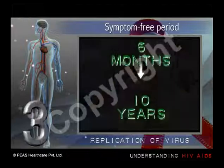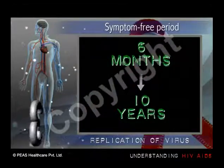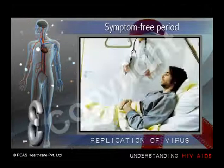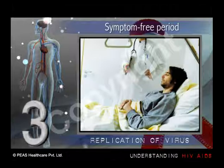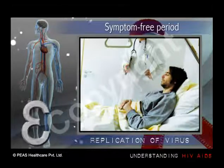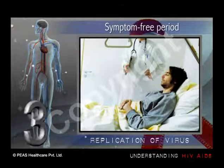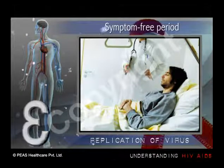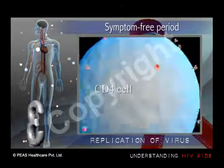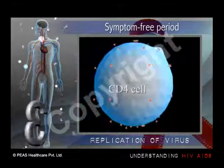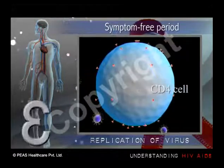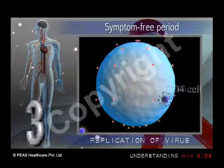After this period, people usually experience a symptom-free period between six months to over ten years, depending on the person. But that does not mean that HIV is not active. Although the person with HIV is experiencing no symptoms, the virus is still replicating inside the body and weakening the immune system.